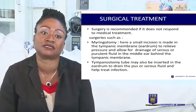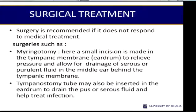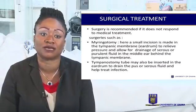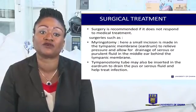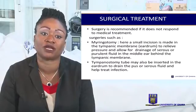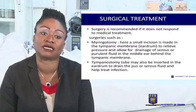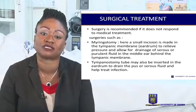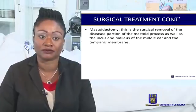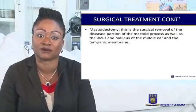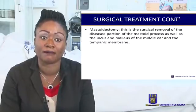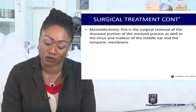Surgery is recommended if the condition does not respond to medical treatments. Surgeries performed include myringotomy, where a small incision is made in the tympanic membrane or eardrum to relieve pressure and allow drainage of serous or purulent fluid in the middle ear behind the tympanic membrane. A tympanostomy tube may also be inserted in the eardrum to drain serous fluid and help treat infection. Mastoidectomy — the surgical removal of the diseased portion of the mastoid process, as well as the incus and malleus of the middle ear and the tympanic membrane — may also be done.